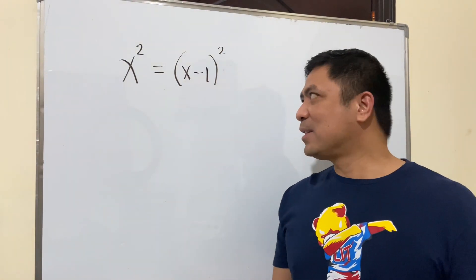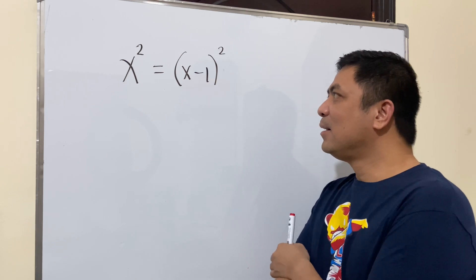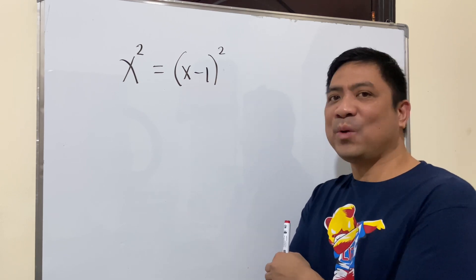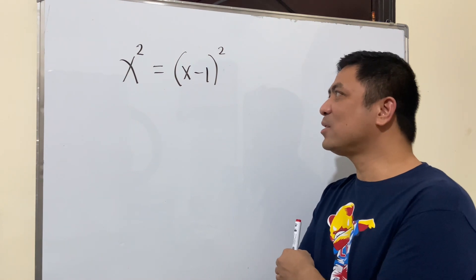Okay, so let's do this once again. We have an equation here, a simple looking equation, but I would always call this as a dangerous equation. So why?